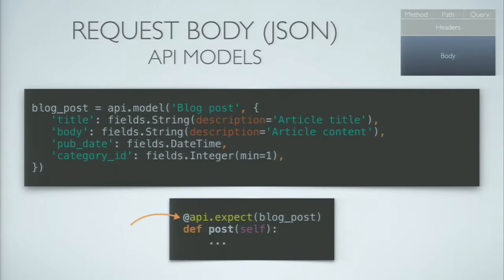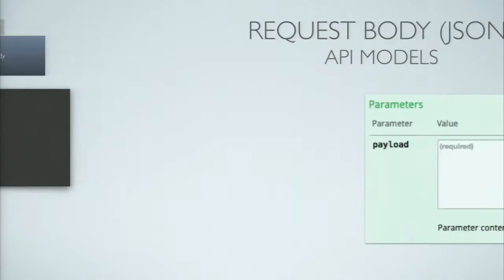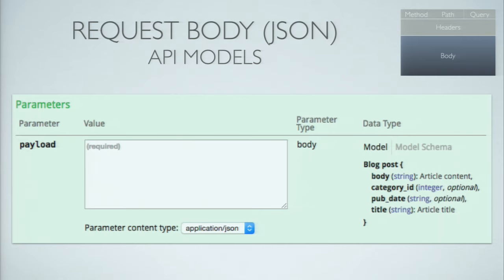Next is the body of the request. Flask-RESTPlus uses something called an API model to validate whether the body of the request is properly formatted. It's slightly similar to the request parser — you also add fields to a definition, but it's more flexible. You use the api.expect decorator to attach it to a method, and then in the Swagger UI you get a payload text field along with additional documentation on the right showing the expected format.